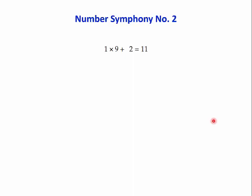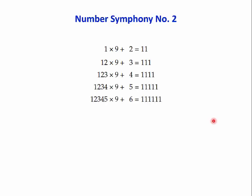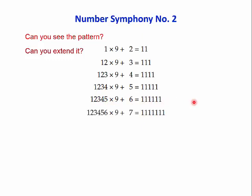Pattern number two: one times nine plus two equals eleven. Twelve times nine plus three equals one hundred and eleven. Already we can see a pattern developing, and you might be able to predict the next one. We're going to get a six here, this will become a seven, and there'll be one more one. So we can continue it.